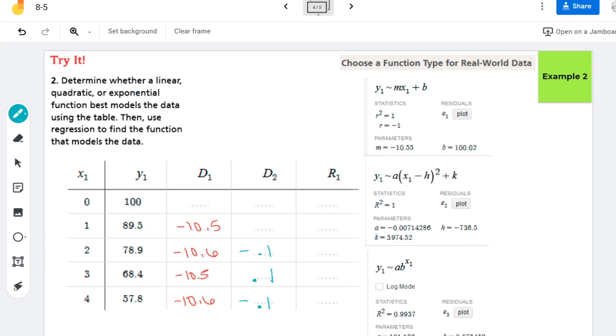And so now I'm going to do my ratios. So remember, with your ratios, you take the number and divide by the number before it. So 89.5 divided by 100 is, oh, I should change color, is 0.895. 78.9 divided by 89.5 is 0.88156. And that goes on, I'm just lazy.